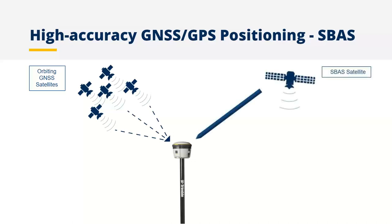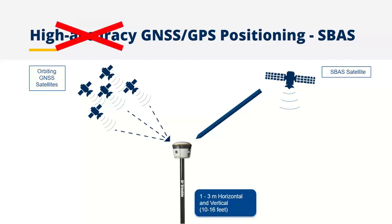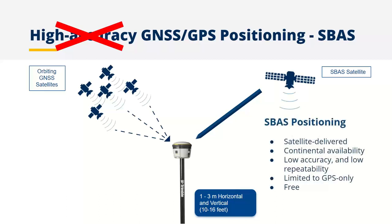SBAS may be a correction method you use today. It is available in many continental regions around the world. In the US we have the WAAS system — a free service. You track a geostationary satellite which provides information for a more accurate solution, typically in the one to three meter range depending on your receiver. I don't necessarily consider this high accuracy either. The benefits are that it is satellite-delivered and available continentally with a clear view of the sky, but accuracy and repeatability aren't great, and constellation support is limited to GPS only. A key benefit is that it is free.